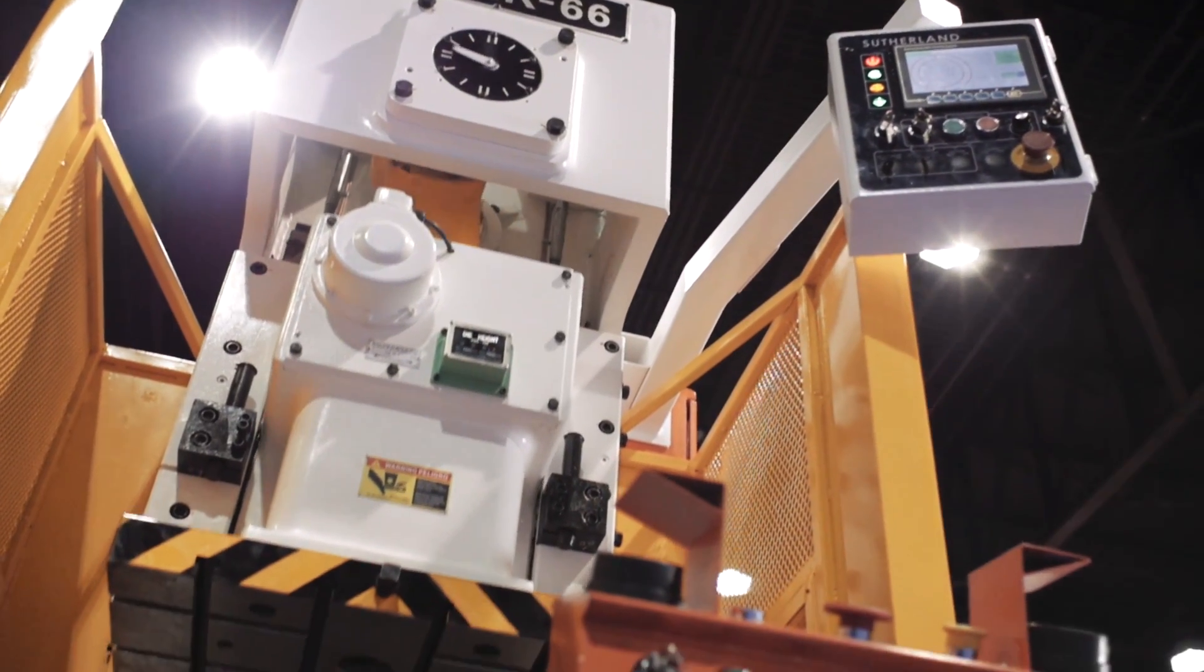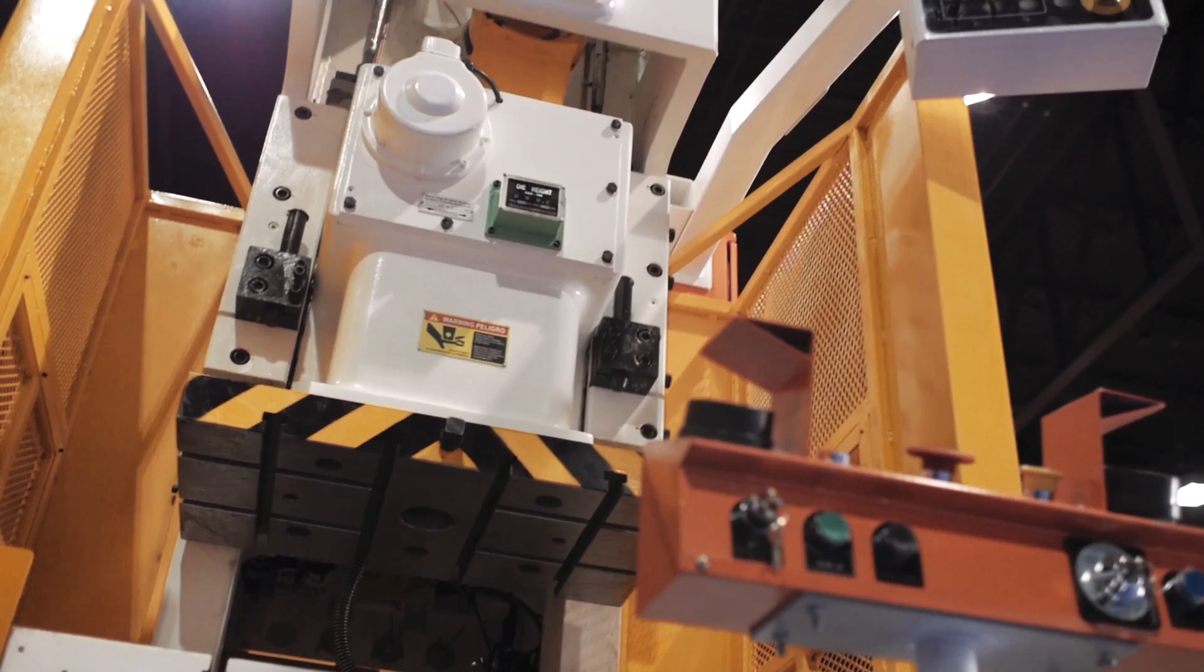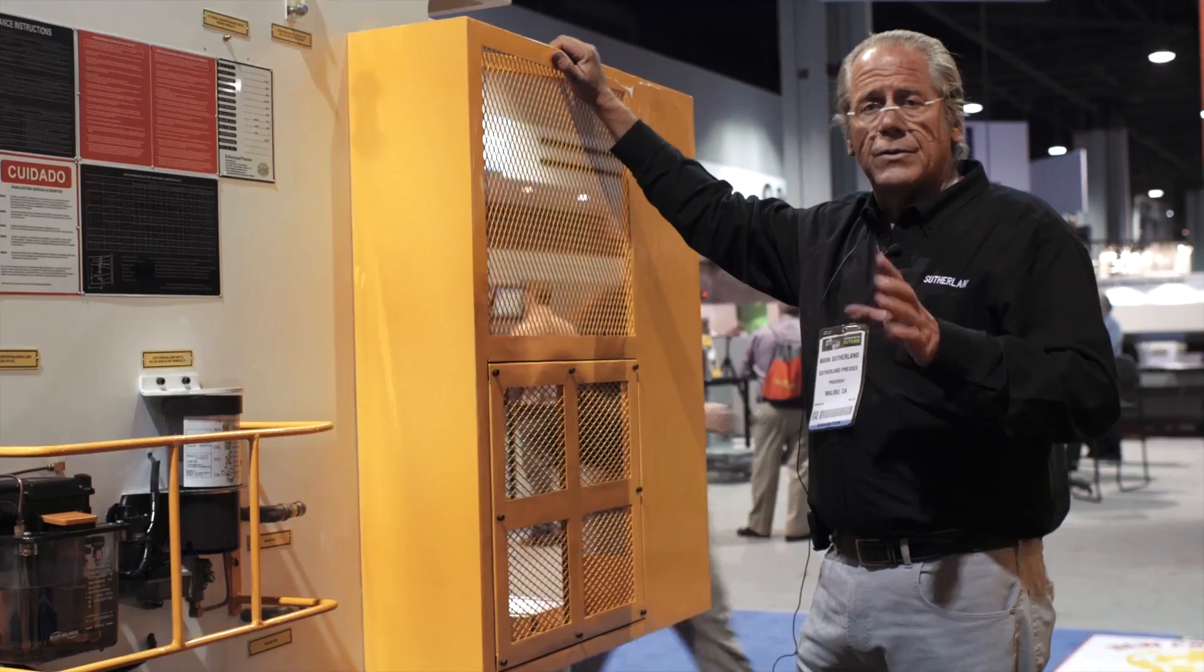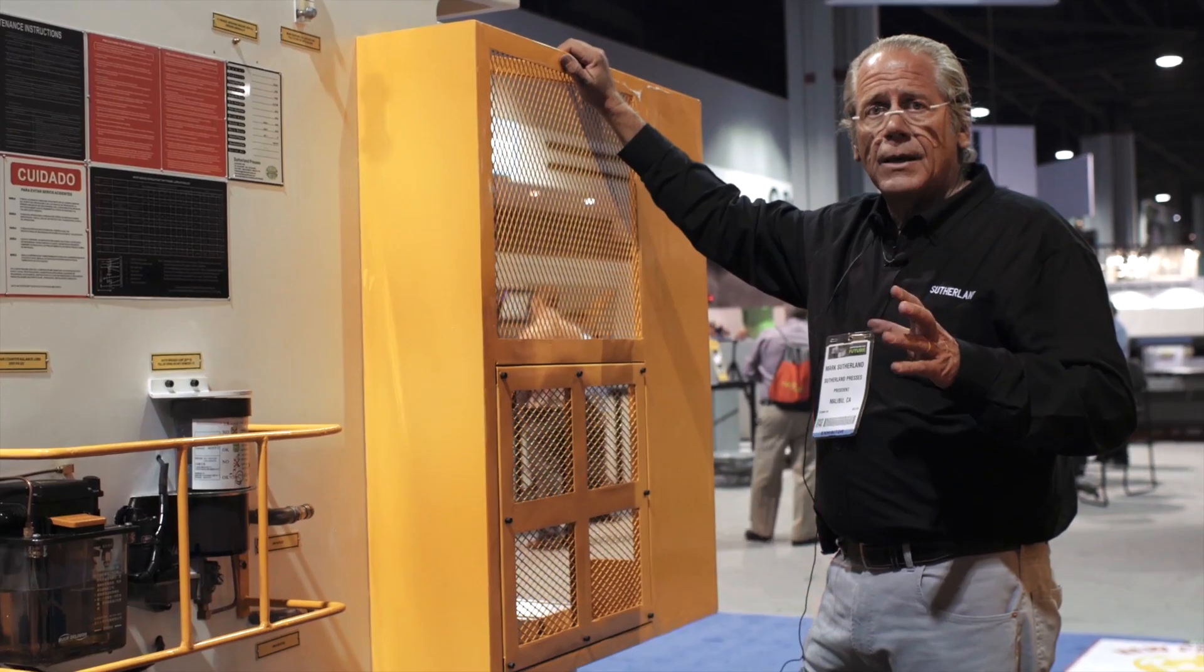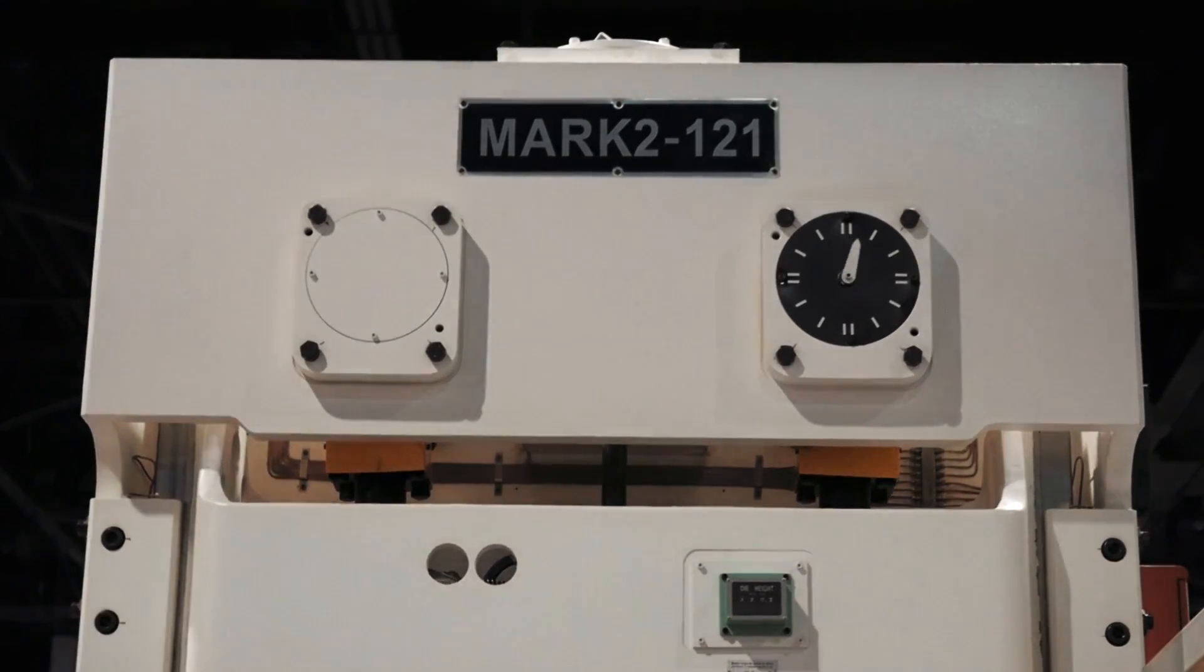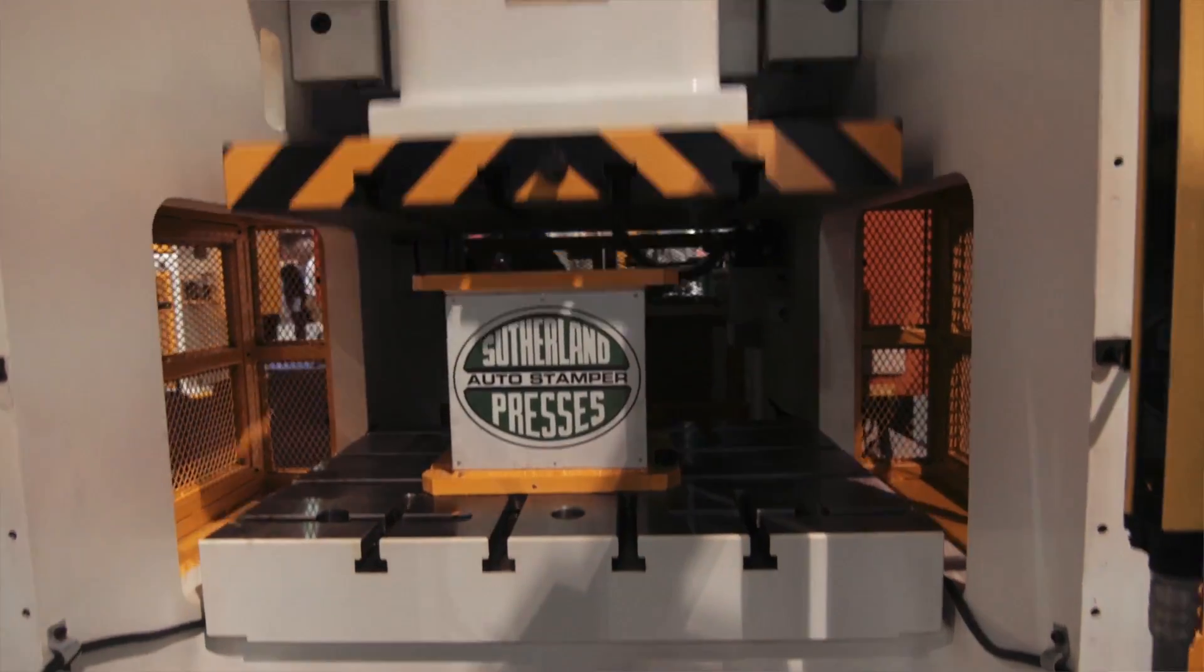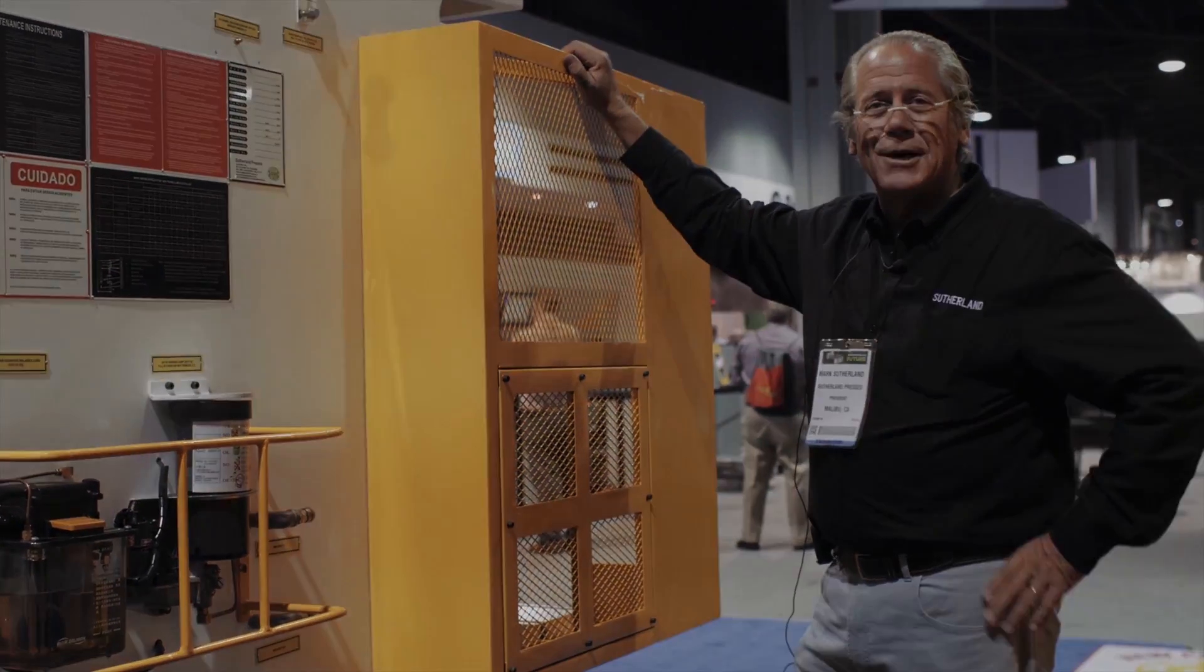So this gives you a pretty good idea of the single point gap frame series, and we make these from 35 to 330 ton. In the next clip, we're going to show you our double point gap frame series and our single point straight sides. Thanks for considering Sutherland.